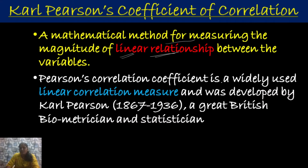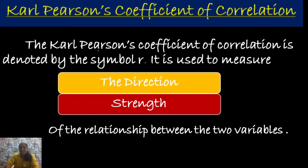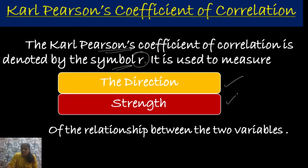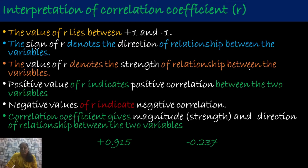Pearson's correlation coefficient is a widely used linear correlation measure and was developed by Pearson. The Pearson's coefficient of correlation is represented by the symbol R. We use the symbol R to represent the correlation coefficient. It is used to measure both the direction and strength of the relationship between the two variables.